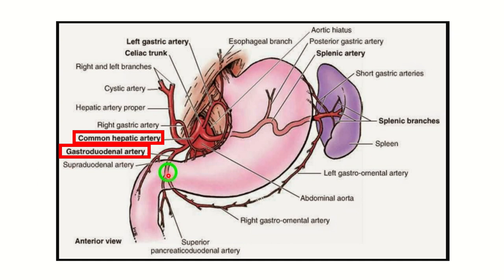Bleeding within the duodenal lumen is caused by ulceration in the first part of the duodenum, which causes erosion of the gastroduodenal artery. Looking back at the diagram, we can see the gastroduodenal artery arising from the common hepatic artery. So the gastroduodenal artery runs behind the posterior wall of the first part of the duodenum and arises from the common hepatic artery.